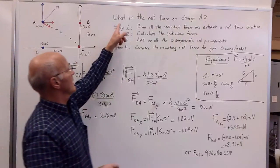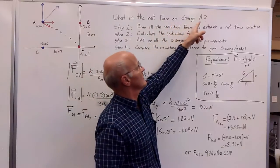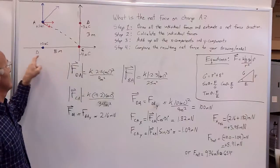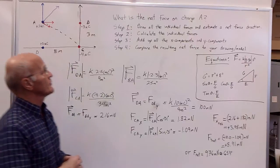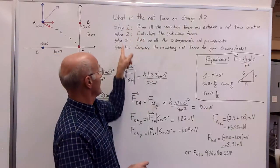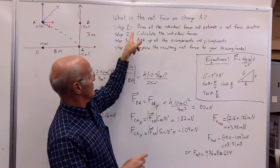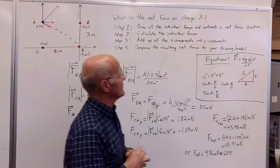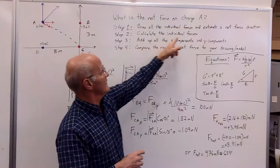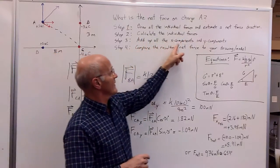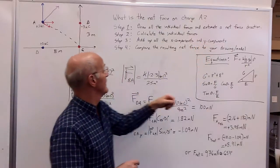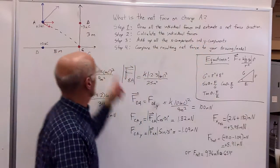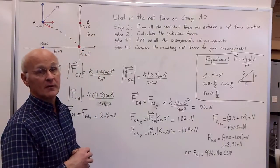So the question is, for this problem, what is the net force on charge A? And this is charge A, this is B, this is C, and charge D. So the approach we're going to use is first of four steps, we're going to draw all the individual forces and estimate the net force direction. Then we'll calculate the individual forces, then we'll add up all the X components and the Y components, and then finally we'll compare that resulting net force with our drawing and model that we have up here on the board.